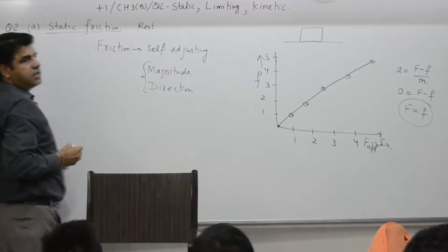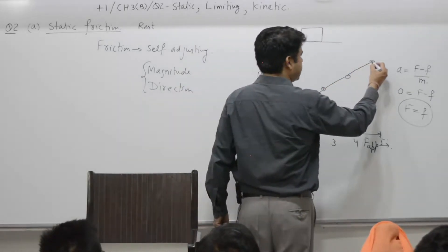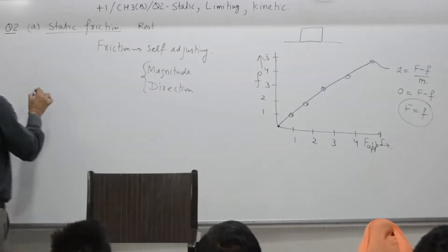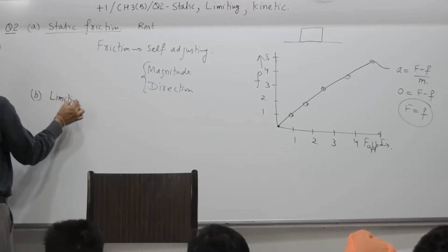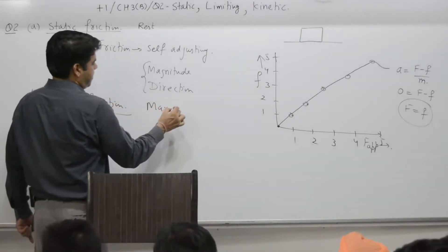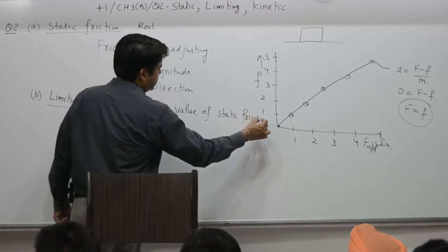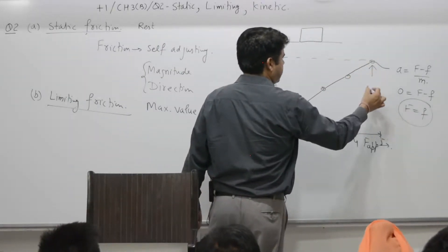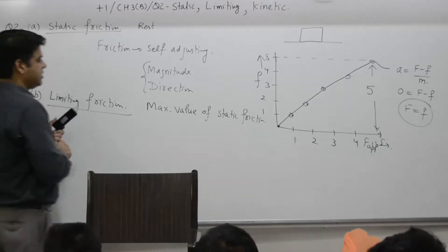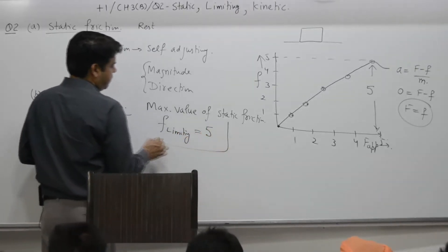The question here was about static friction. Static friction at 1 unit applied force is 1, at 2 it is 2, at 3 it is 3. The B part is limiting friction — the maximum value of static friction. In this case, the maximum value is 5 units. The upper limit of static friction is termed limiting friction, and its value for this example is 5 units.